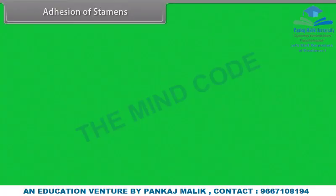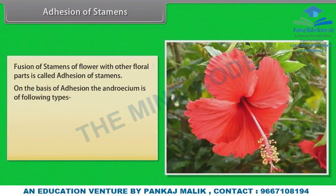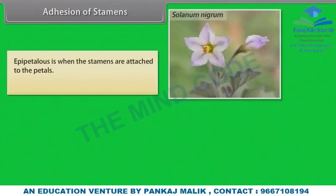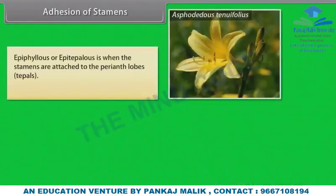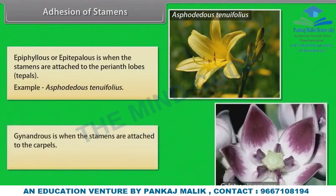Adhesion of stamens refers to the fusion of stamens of a flower with other floral parts. On the basis of adhesion, the androsium is of the following types: Epipetalous — when stamens are attached to the petals, example Solanum nigrum (Brinjal); Episepalous — when stamens are attached to the sepals, example Verbena; Epiphyllous or epitepalous — when stamens are attached to the perianth lobes (tepals); Gynandrous — when stamens are attached to the carpels, example Calotropis procera.